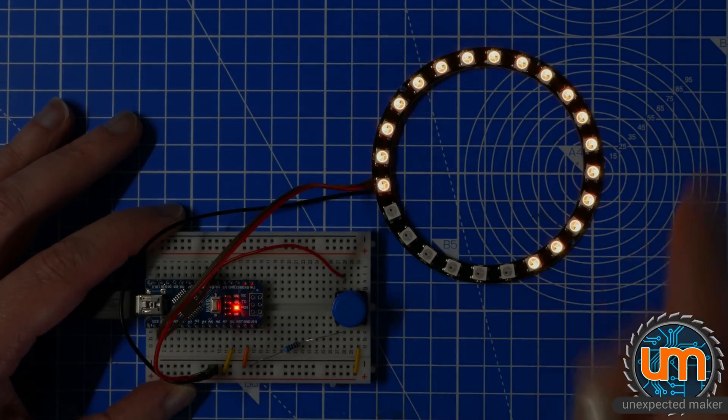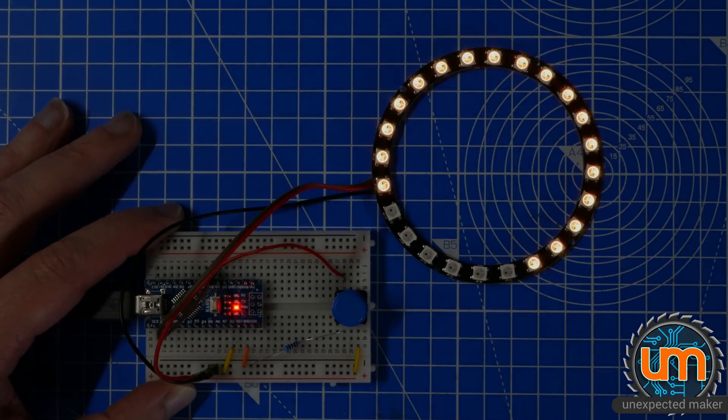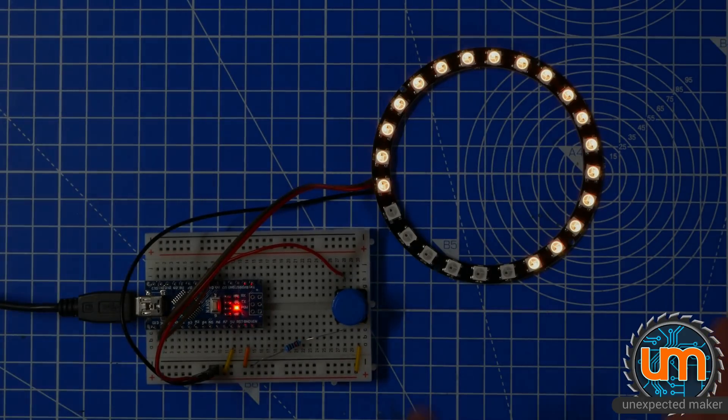So obviously, if your high score is higher than what the ring can show, well, yeah. It doesn't wrap or anything. I could probably change the code to do that. So that's the game, basically.